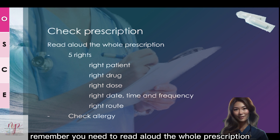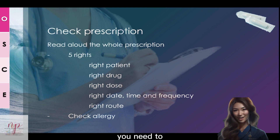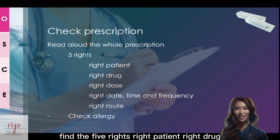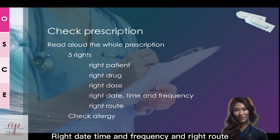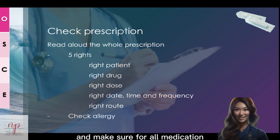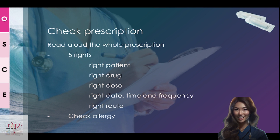Remember, you need to read aloud the whole prescription. You need to find the five rights: right patient, right drug, right dose, right date, time and frequency, and right route. Make sure for all medication you check the patient's allergy.